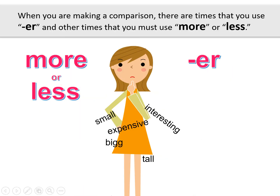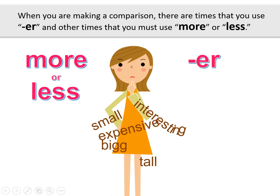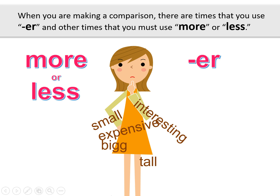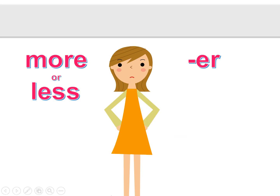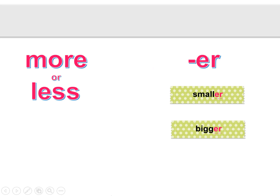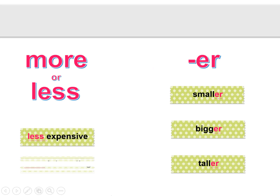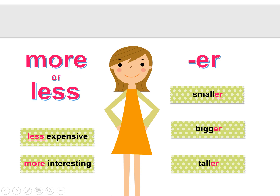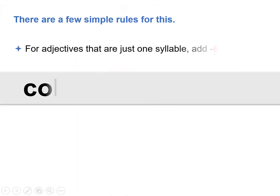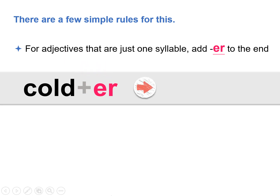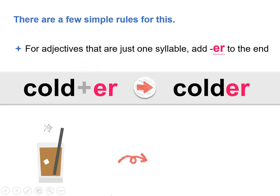When you are making a comparison, there are times that you use ER and other times that you must use more or less. There are a few simple rules for this. For adjectives that are just one syllable, add ER to the end.